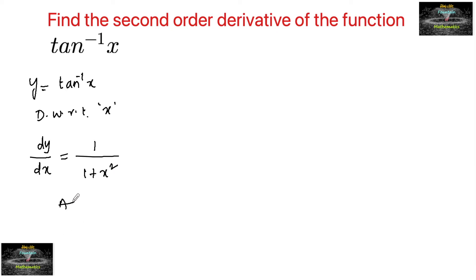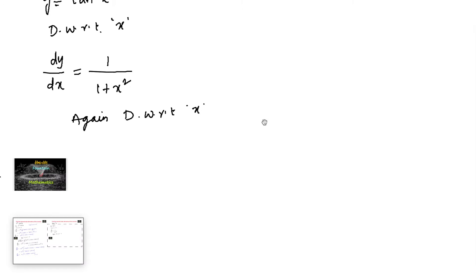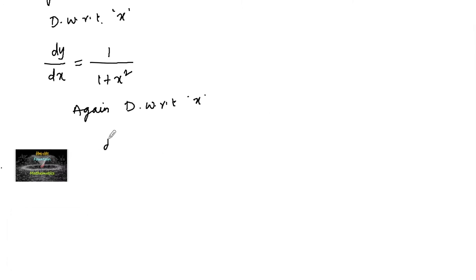Now again differentiating with respect to x, we will have d by dx of dy by dx is equal to d by dx of 1 upon 1 plus x square.